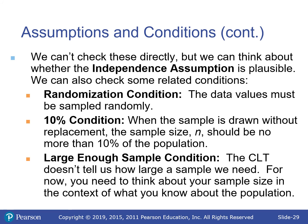We can't always check these conditions directly. For independence — is it plausible given how the sampling happened? Sometimes the problem will state it outright. Randomization will generally be stated, or assumed. The 10% condition: no more than 10% of the population, drawn without replacement. When the sample exceeds 10%, it slightly changes the probability calculation. The large enough sample condition doesn't specify an exact number — 20 is big enough in most cases.